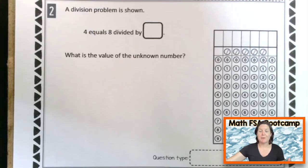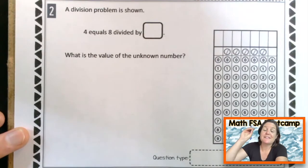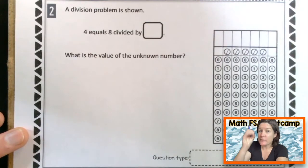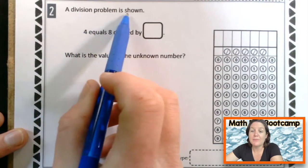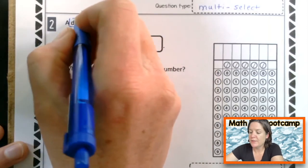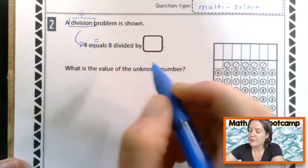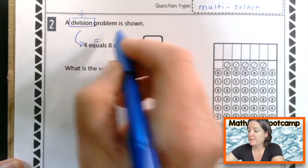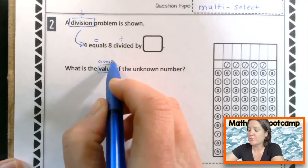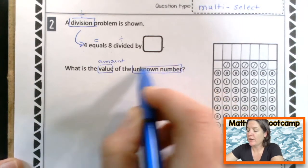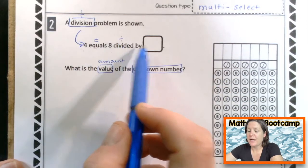Let's rock out to question number two. Number two, let's go ahead and read it and mark up our text. Remember that if I mark anything on my text that is not on yours, it's a very wise thing to take these strategies that I'm giving and making them your own. A division problem is shown. So division means that we are going to know the total and we will distribute it equally. 4 equals 8 divided by what? What is the value or the amount? Value is the amount of the unknown number. Where is that unknown number? It is right there.